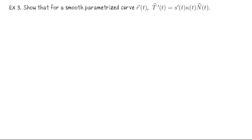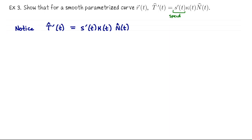Let's finish this lecture with something we'll use in our discussion of acceleration. Let us show that for a smoothly parametrized curve R(t), T-hat prime equals s prime times the curvature times N-hat. Here s prime is the speed — a scalar, the curvature is a scalar, and N-hat is a vector. So T-hat prime decomposes into a scalar times a unit length vector, meaning the length of T-hat prime is the speed times the curvature.